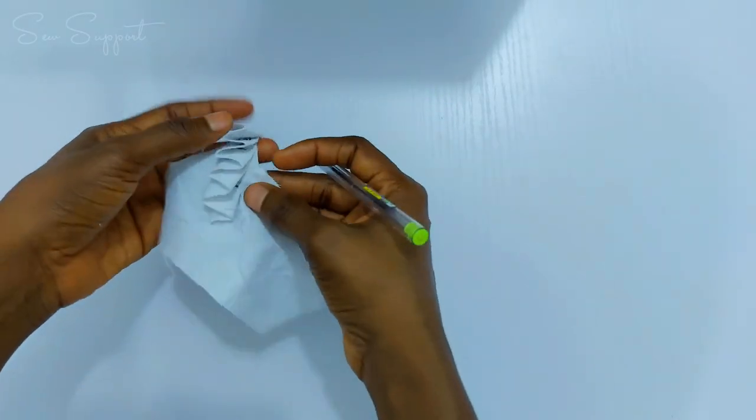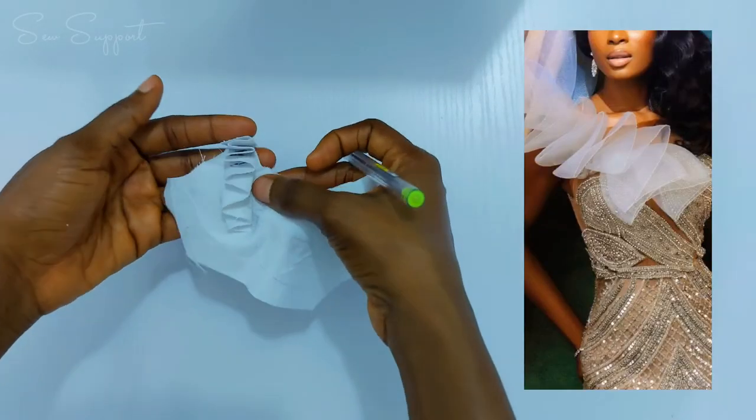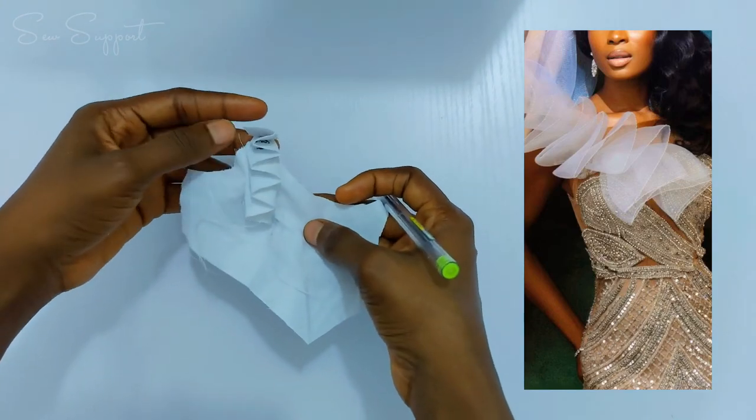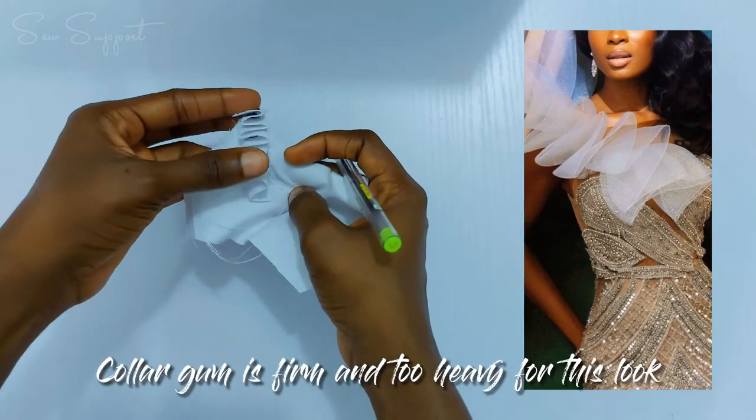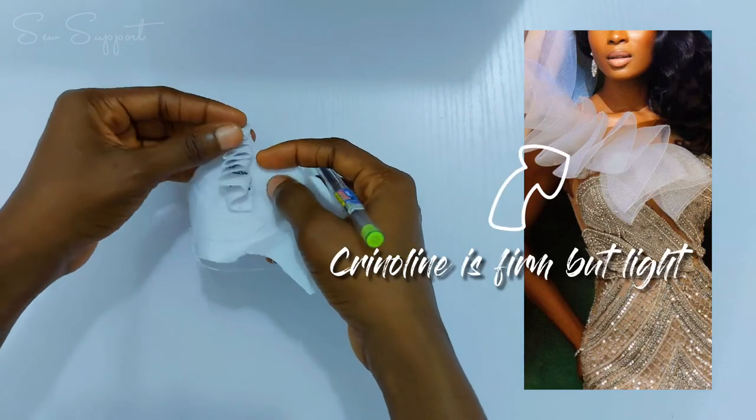Now if you do it that way you have it fuller because mine is not as full as the one in the picture. This is color gum so it's heavy and it's pulling down, but with crinoline it will stand.